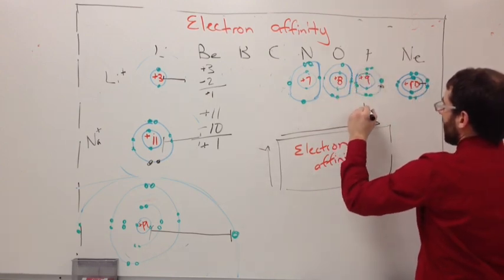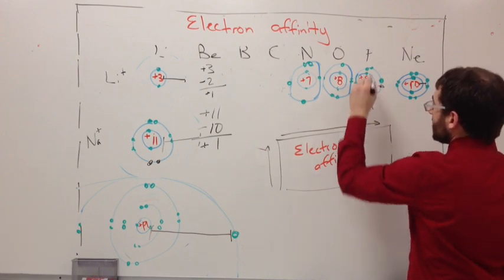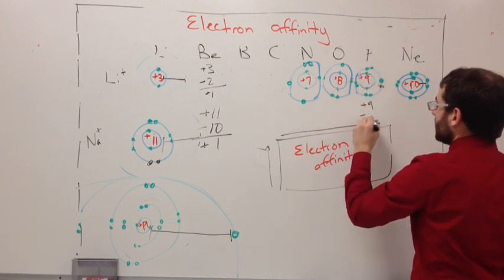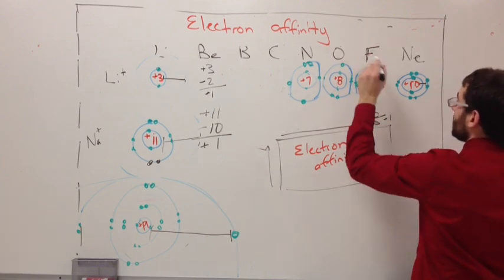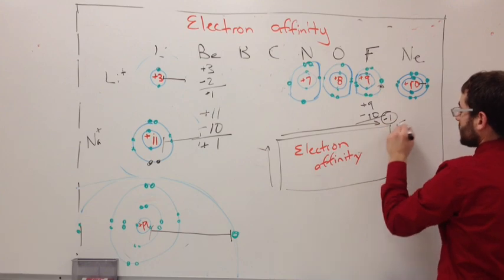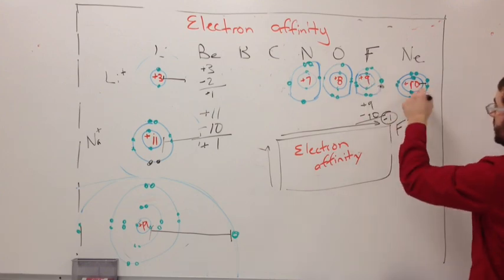Take a look at this. Now it has +9 which was the original number of protons. Now it has ten electrons around it so -10. Now the charge is -1, which you knew fluorine becomes -1. This is why. It wants to gain one so it looks like neon.